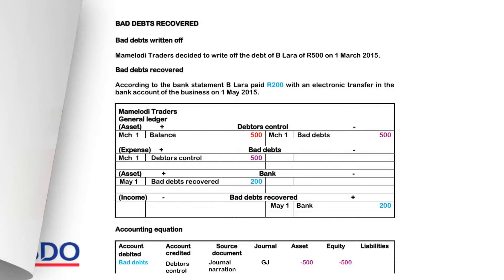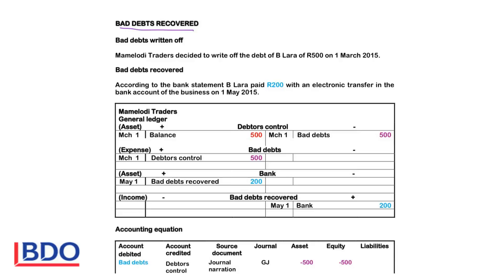Good morning. We will pay attention to bad debts recovered today. When bad debts are written off, you reduce the account of the debtor and close his account, writing off bad debts to create the expense. The debtors control account will be credited with 500 rand, and the bad debts expense will increase on the debit side. The account of the debtor will be closed in the books of the business because he doesn't owe any money.